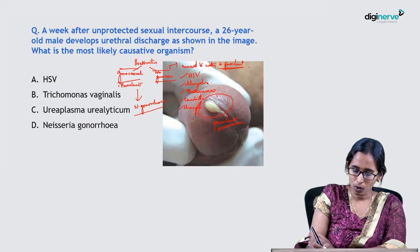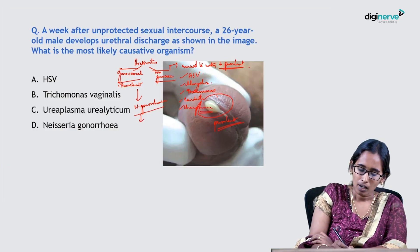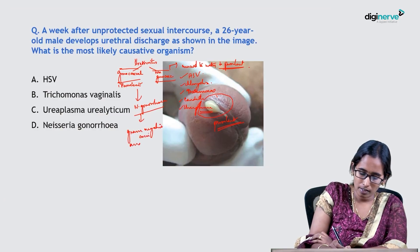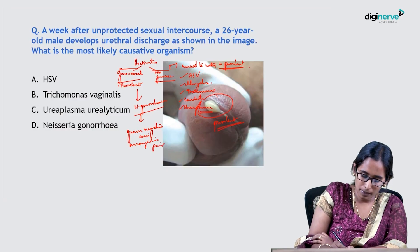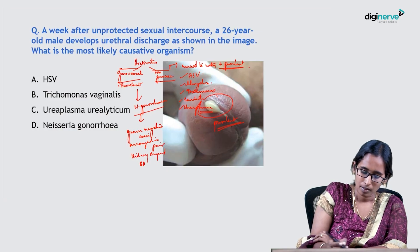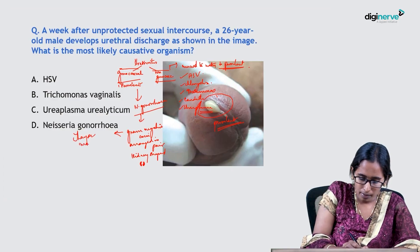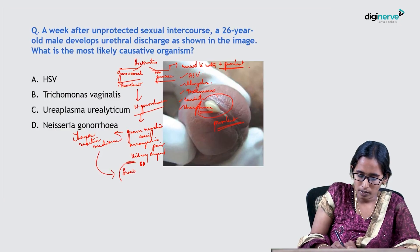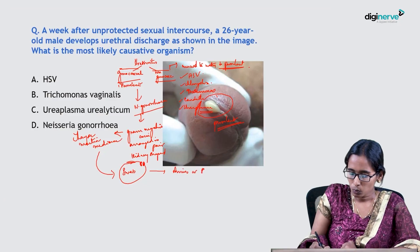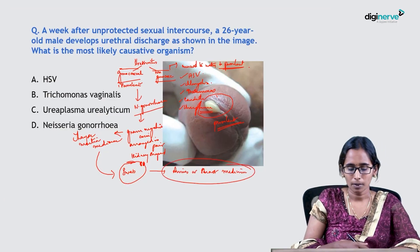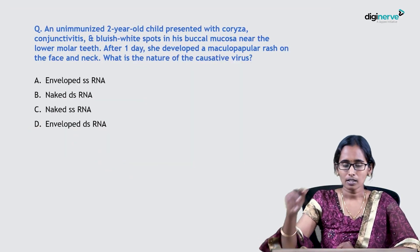Ureaplasma is also a non-gonococcal agent. For gonococcal urethritis, the causative agent is Neisseria gonorrhoeae — gram-negative cocci arranged in pairs, kidney-shaped. The culture medium of choice is Thayer-Martin medium. The swab is usually transported in Amies or Stuart medium. So the answer is Neisseria gonorrhoeae.